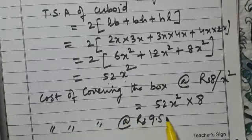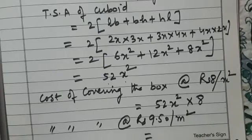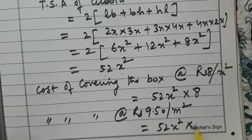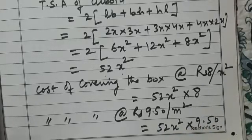At Rs 9.50 per square meter, what will be the cost? That is 52x² × 9.50.